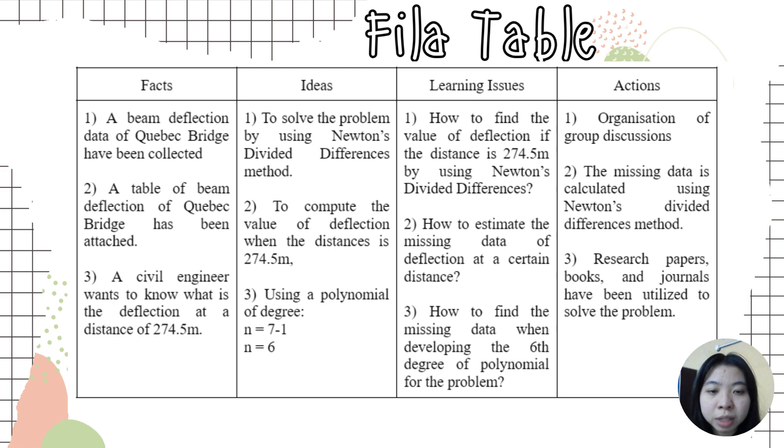Now, I would like to present problem setup. First is the beam deflection data of Quebec bridge which have been collected. Second, a table of beam deflection of Quebec bridge which has been attached. Third, a civil engineer wants to know what is the deflection at a distance of 274.5 meters. The idea is to solve the problem by using Newton's Divided Difference methods to compute the value of deflection when the distance is 274.5 meters.